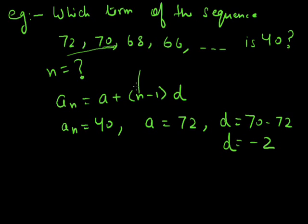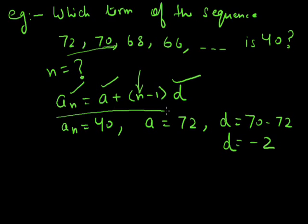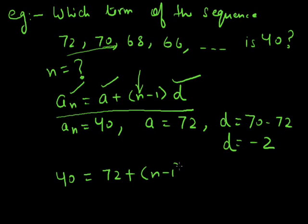Now we have to find out the value of n. We know the value of a and the common difference d, so we can substitute all three values into the formula. It becomes: 40 = 72 + (n-1)(-2).